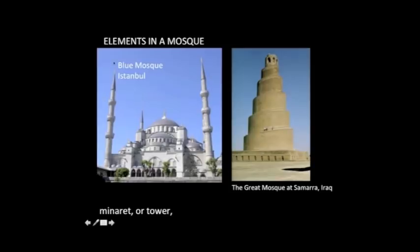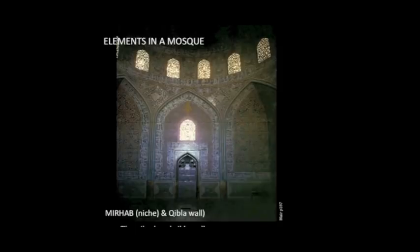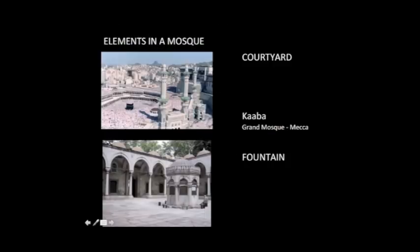The Blue Mosque in Istanbul, an Ottoman structure from around 1550, has fairly normative minarets. The Great Mosque in Samara, Iraq, has a minaret which is astonishing — it almost looks like a ziggurat or some kind of Dairy Queen experiment gone terribly wrong. You need the mirhab, the niche, and the qibla, the wall, as we mentioned before. You also need a courtyard for assembly and a fountain for ritual cleansing.